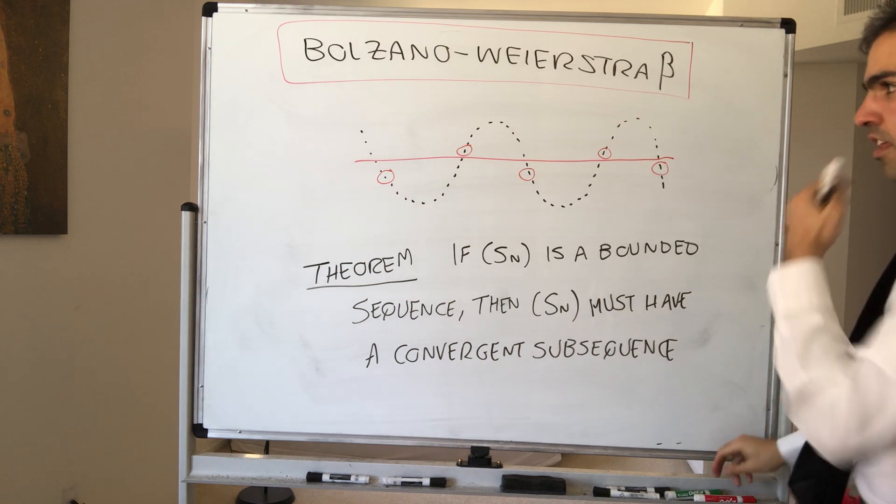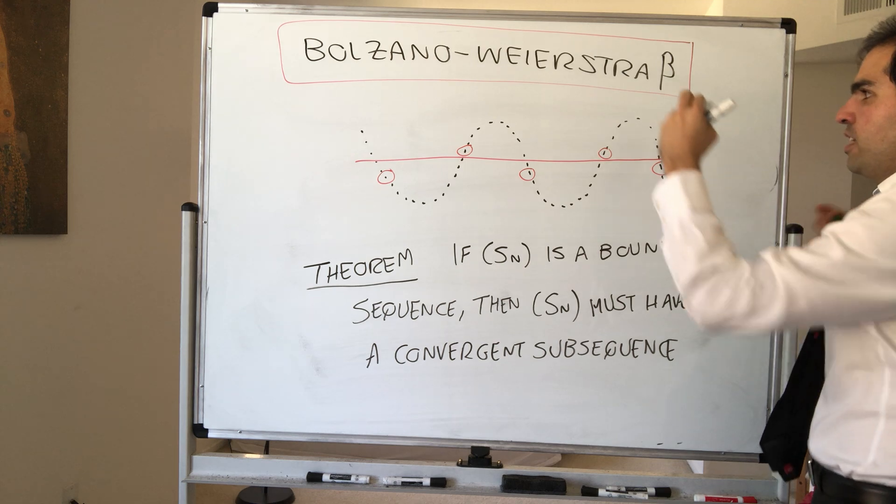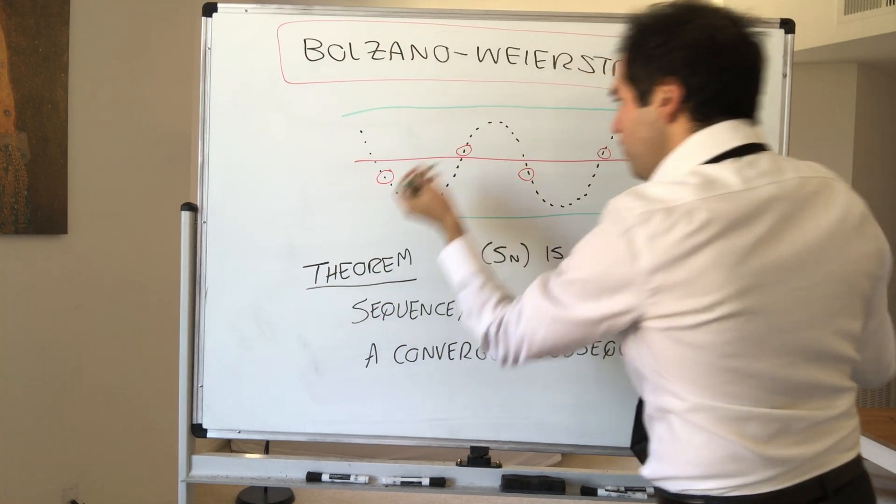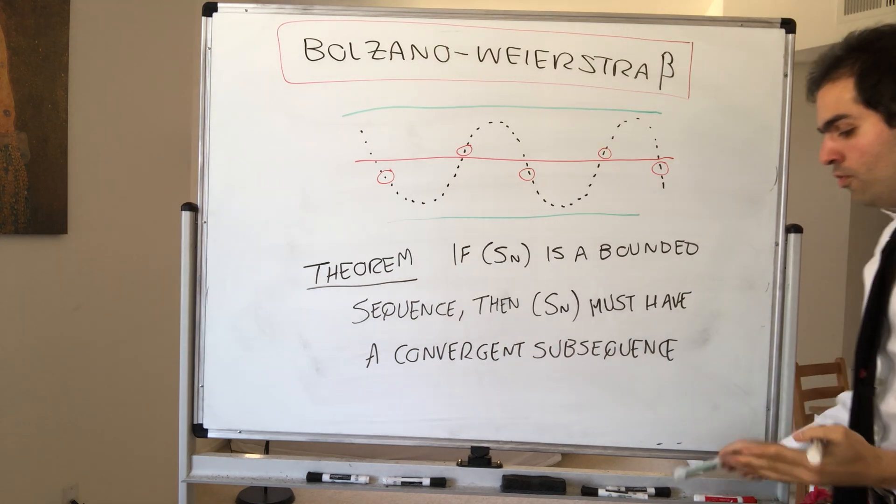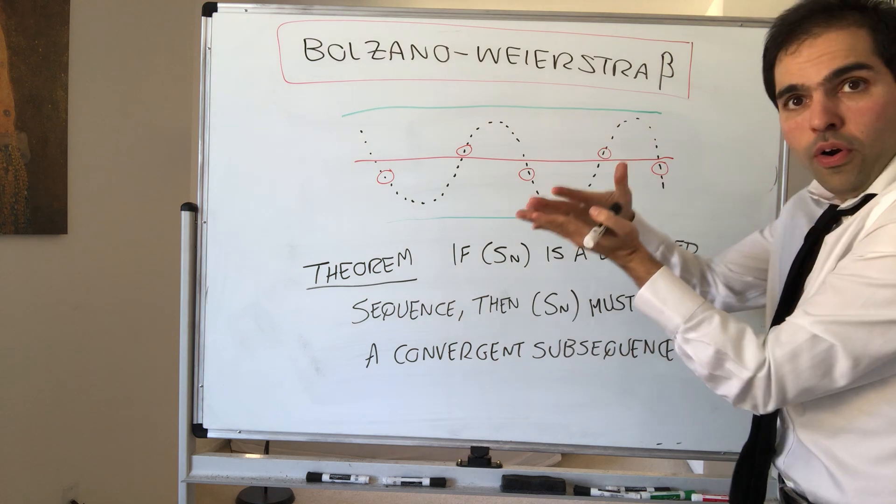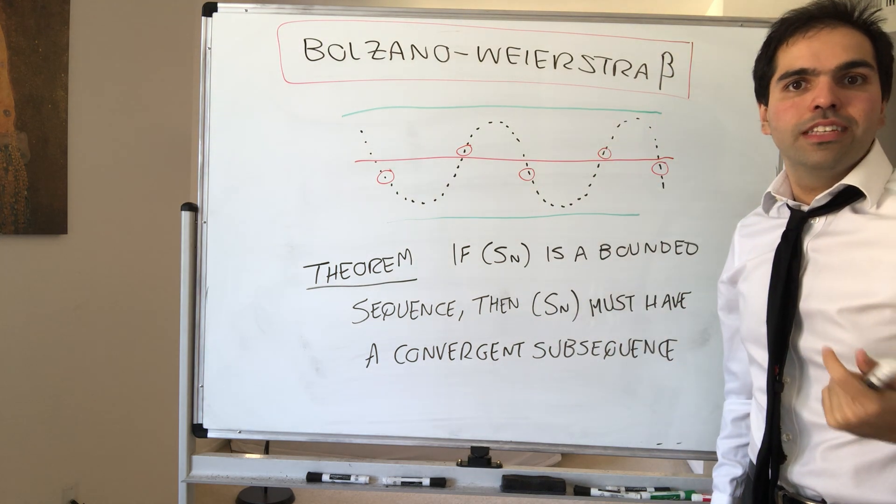In other words, all that is saying is, if Sn is trapped between two numbers, then even though in itself it might not converge, because it is trapped between those two numbers, it turns out that it must have at least one convergent subsequence.